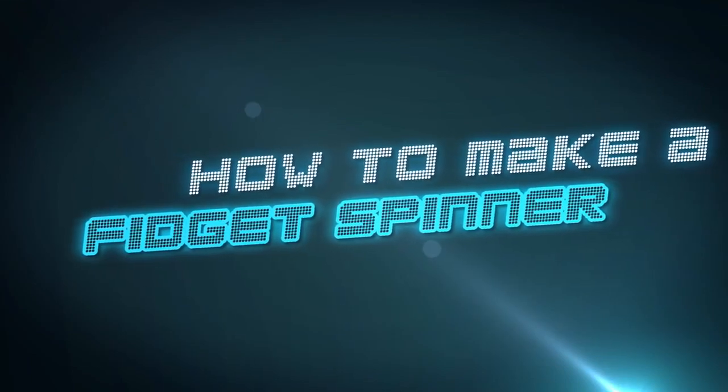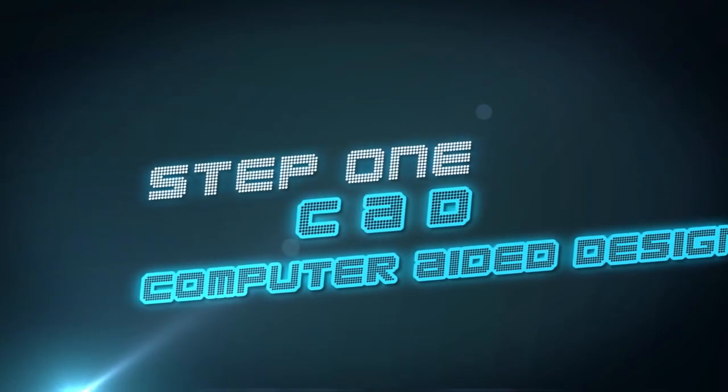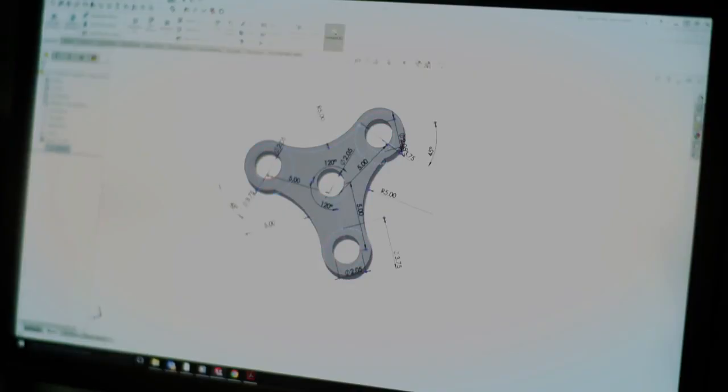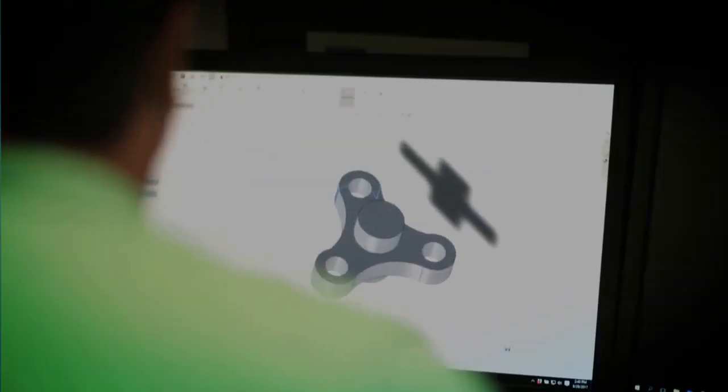Here's how we make a fidget spinner. First, our engineers draw up a design using a computer. This is called computer-aided design, or CAD.